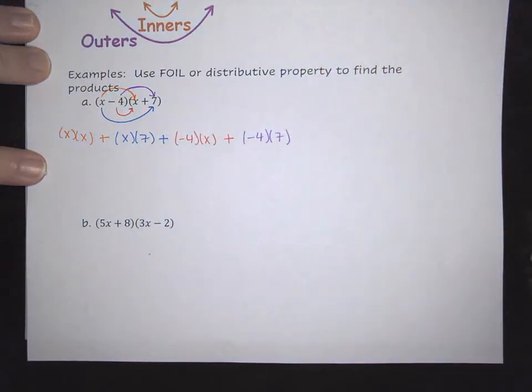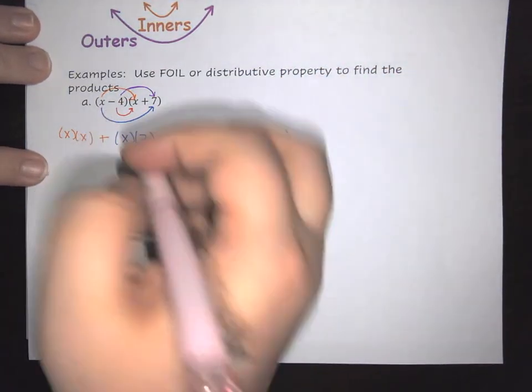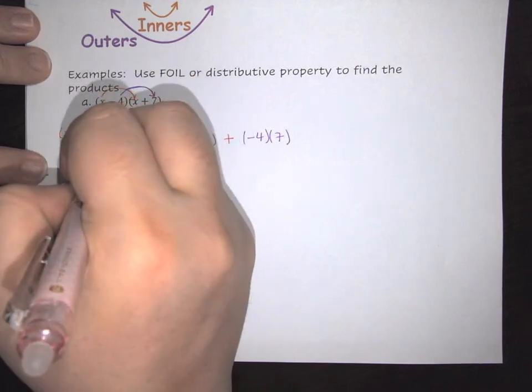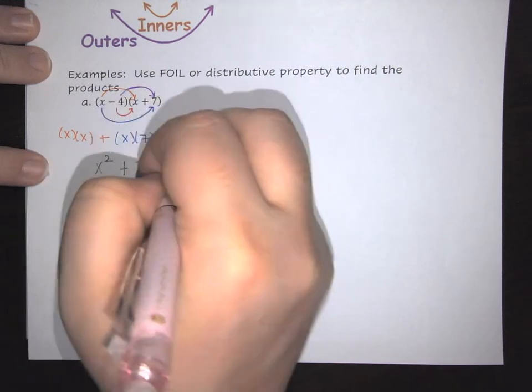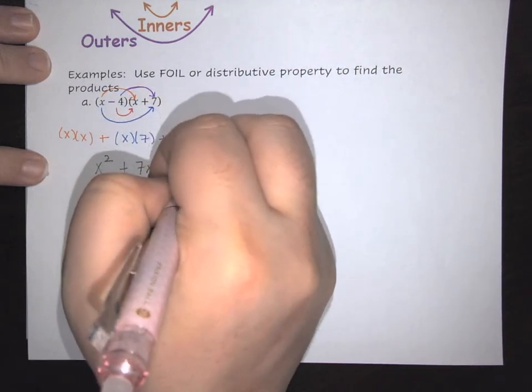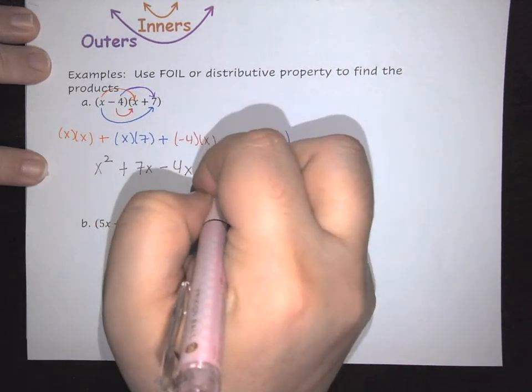Once we do that, we're going to do the math. So X times X is going to be X squared. Then we have X times 7, which is 7X, minus 4X, and then minus 28.